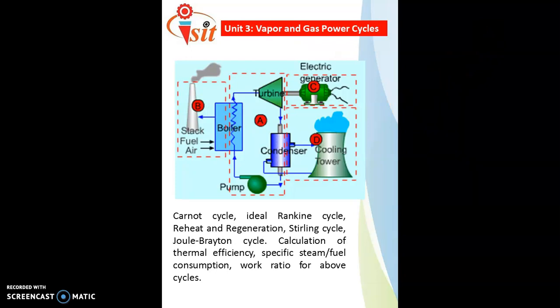The third unit deals with vapor and gas power cycles. There are two kinds of vapor power cycles: the Carnot cycle and the Rankine cycle. The Carnot cycle is a theoretical one not used in actual practice, while the Rankine cycle is the ideal cycle. Every steam power plant and sugar factory works on the Rankine cycle. It includes the reheat and regeneration process, the Joule-Brayton cycle under gas power cycles, calculation of thermal efficiency, specific steam consumption (SSC), work ratio, and cycle representation on P-V and T-S plots.